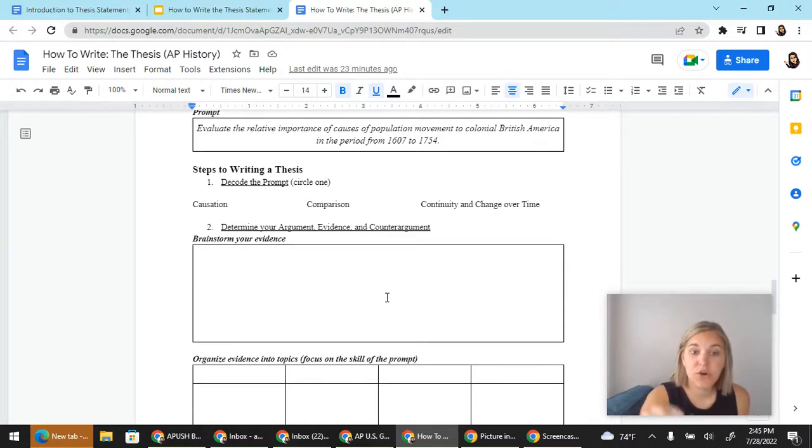So this time students decode the prompt on their own. They brainstorm their evidence and again based on your level of students you may determine whether you want them to do this individually or with a partner. I do not recommend doing this with a small group because small groups are going to be more likely to have passive participants and you want everyone to be actively engaged in this process.